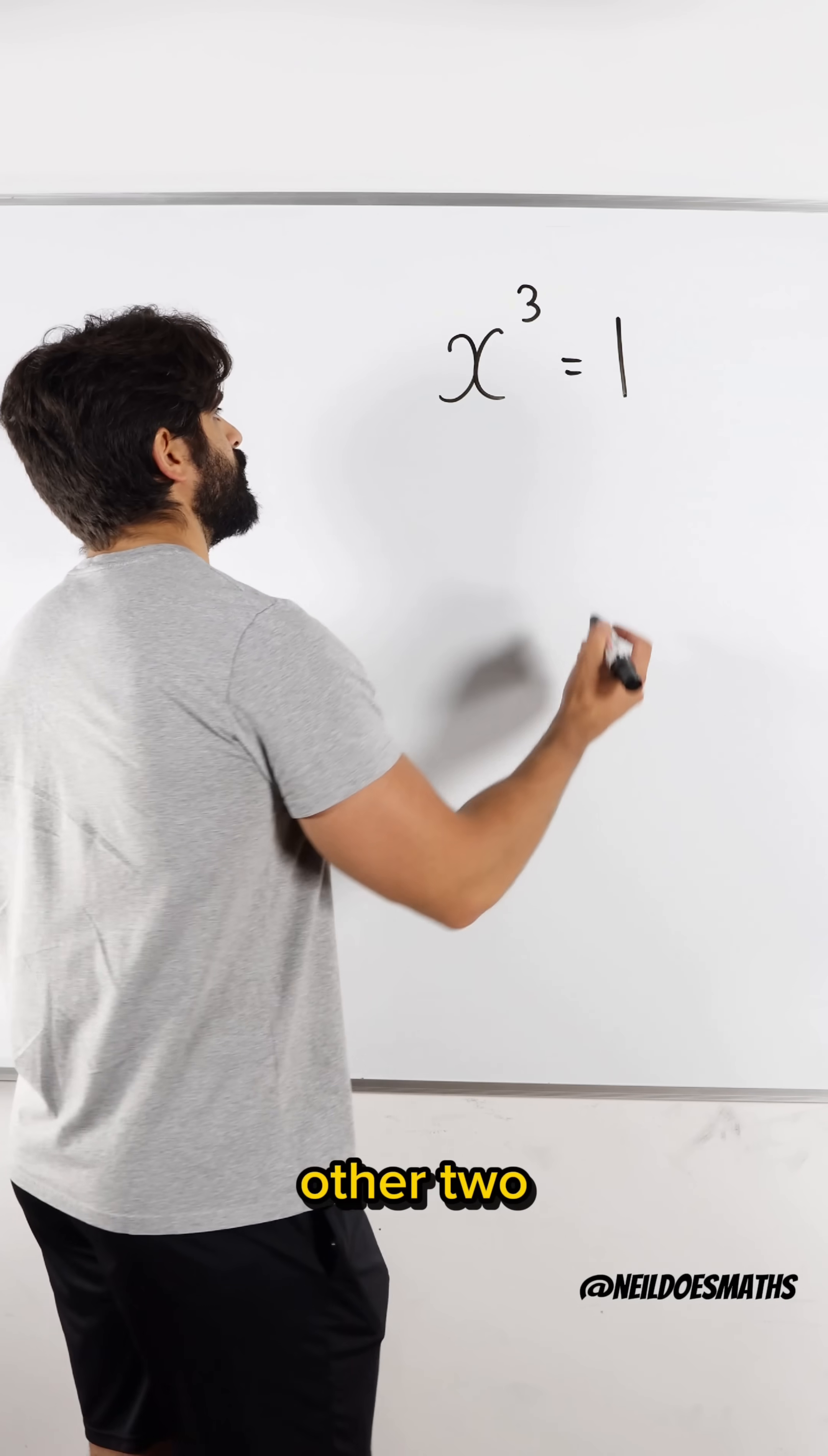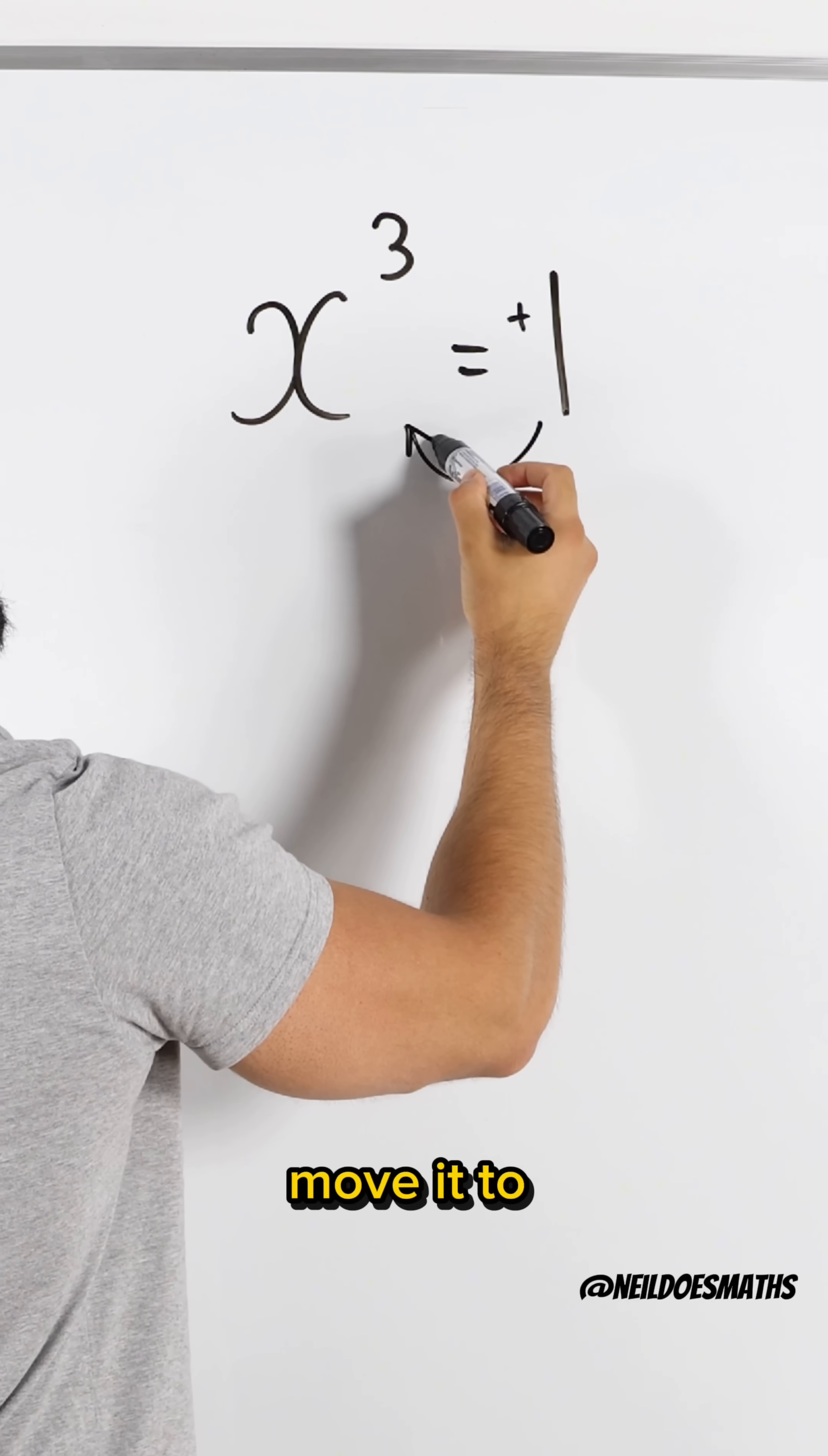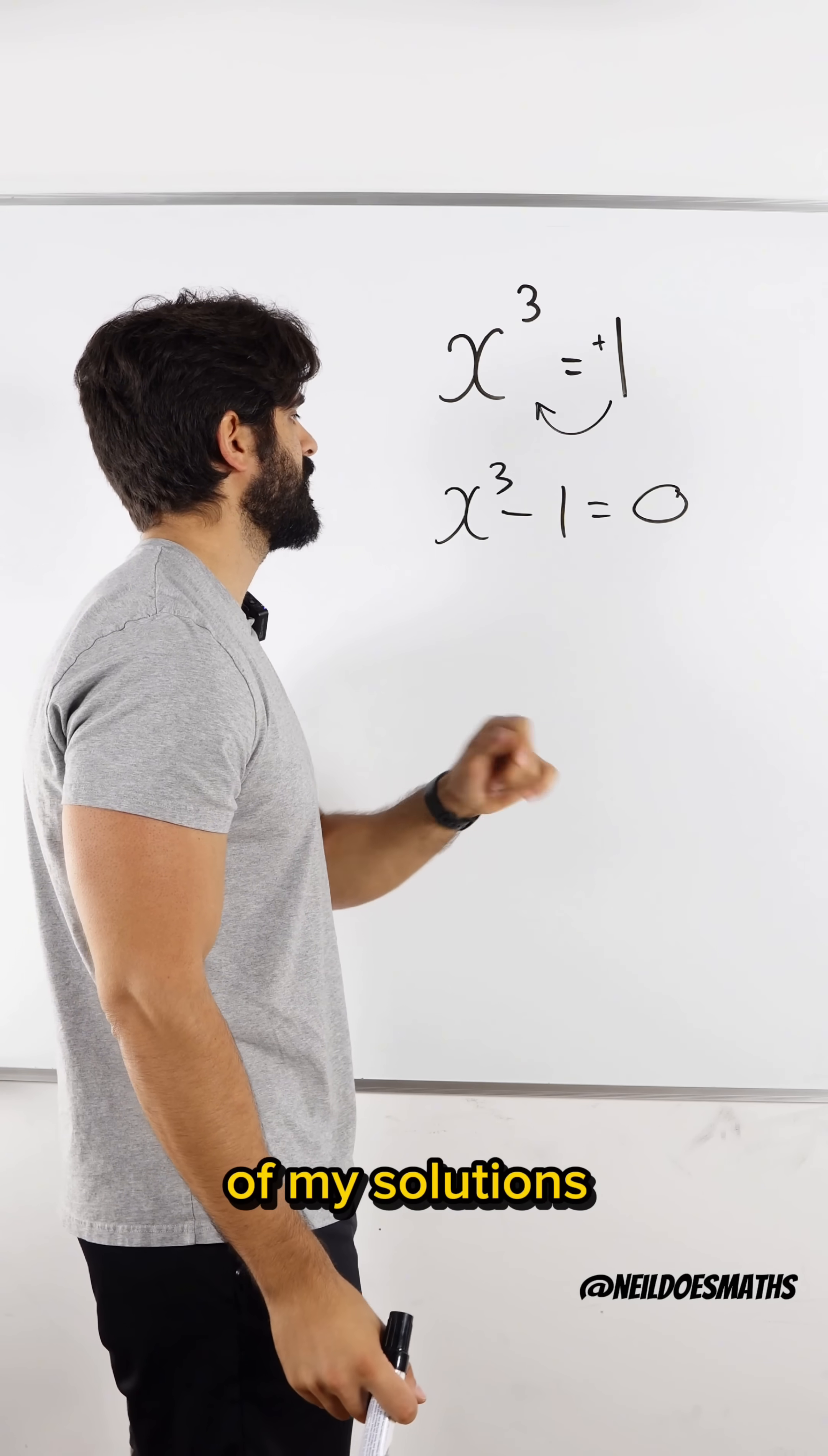How do we find those other two? Well, the first thing we're going to do to solve this is we're going to take our 1, we're going to move it to the left side, it becomes a minus 1, equals 0. And now we can solve this knowing that one of my solutions is 1.